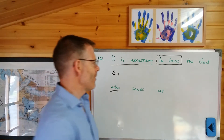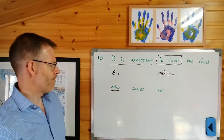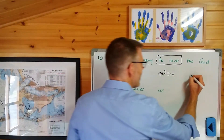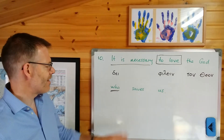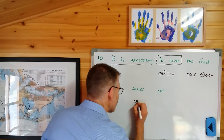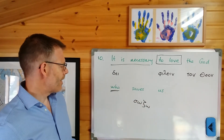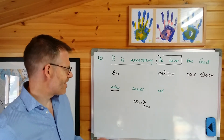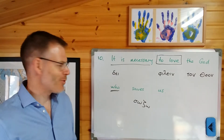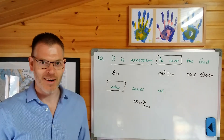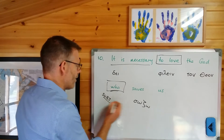"To love" comes from phileo, so the stem is phil- and then -ein: philein. "The God" is the object of the infinitive, so ton theon. Now for "saves us" we need the verb sozo. It's present tense. The relative pronoun is the subject of this verb — "it is he who saves us" — so we want third person singular: sozei.